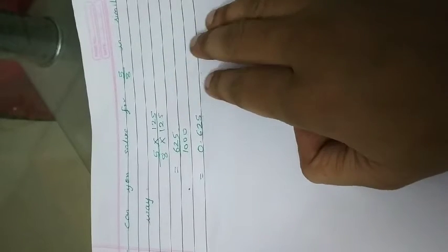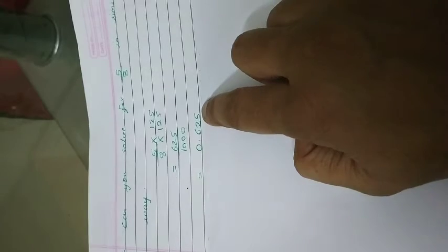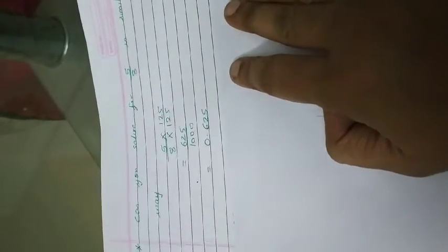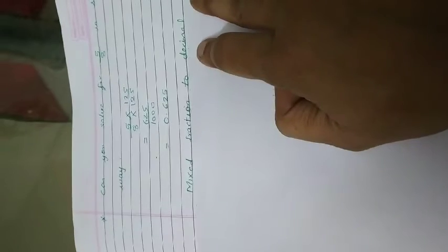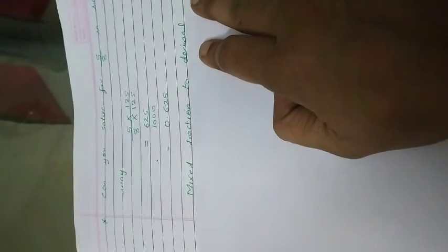Yes, kids. The answer is 0.625. As you can see that there are 3 zeros in denominator. Very good.